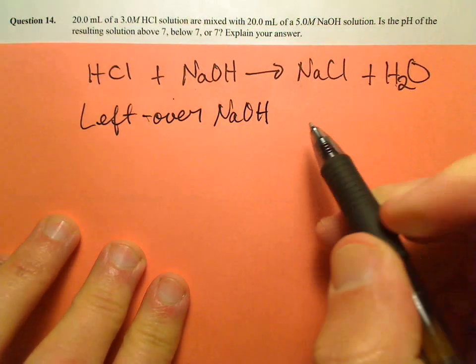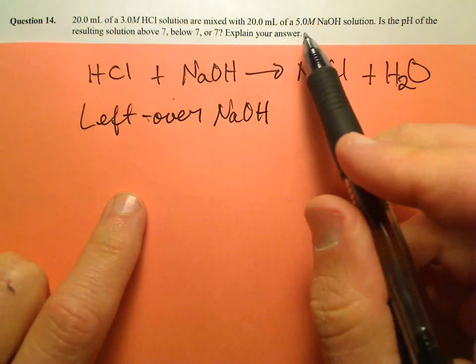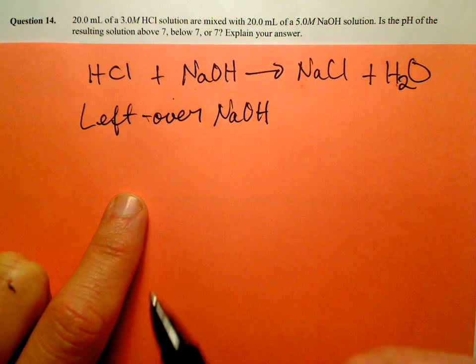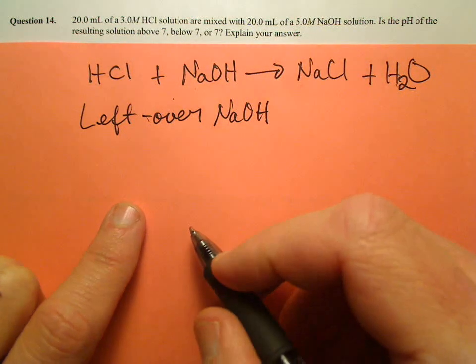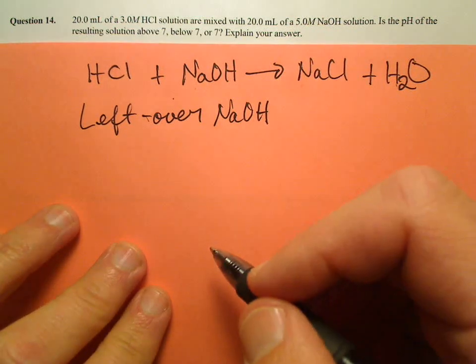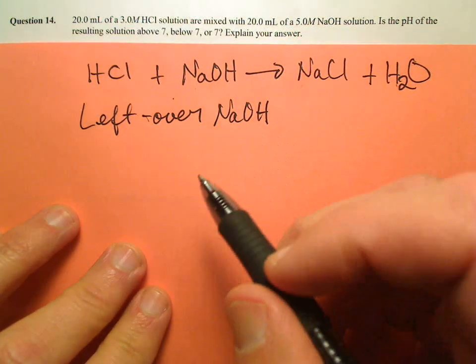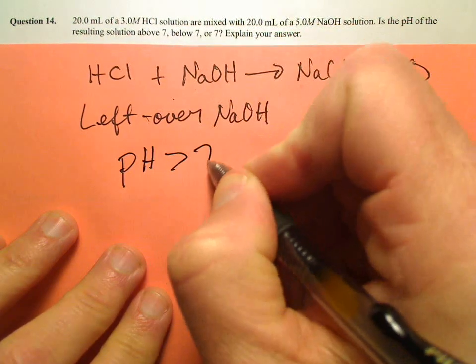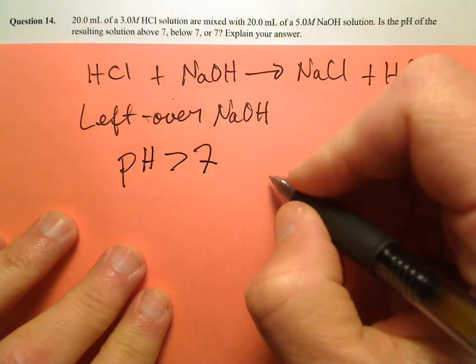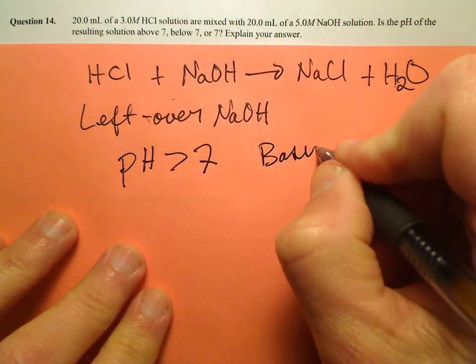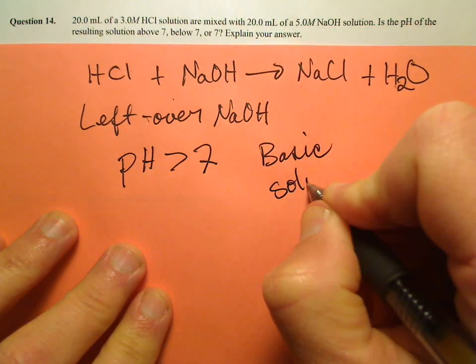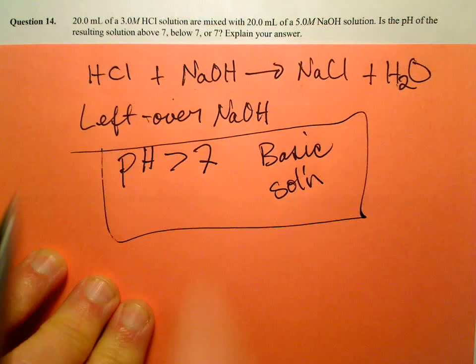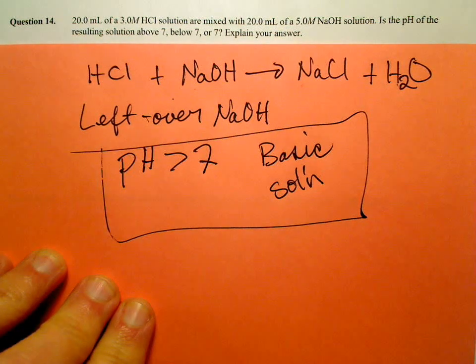There are more moles of sodium hydroxide than I need to react, than I have HCl to react with it. So since there's leftover sodium hydroxide, sodium hydroxide is a base. That means that that solution is going to have a pH greater than 7. It's a basic solution. Remember, SOL apostrophe N is an abbreviation for solution. It's a basic solution.